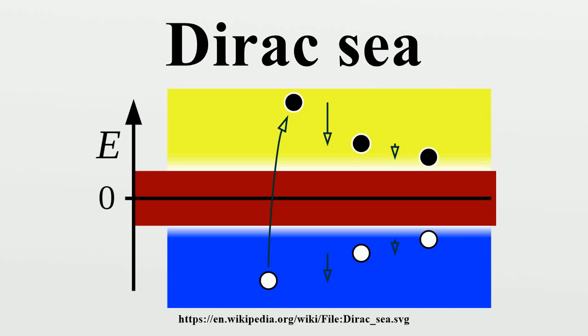The Dirac sea is a theoretical model of the vacuum as an infinite sea of particles with negative energy. It was first postulated by the British physicist Paul Dirac in 1930 to explain the anomalous negative energy quantum states predicted by the Dirac equation for relativistic electrons.